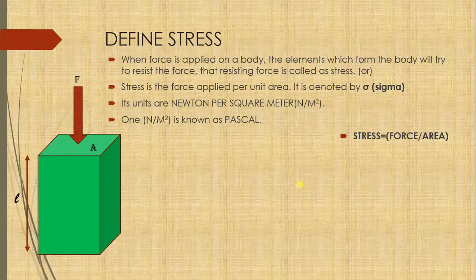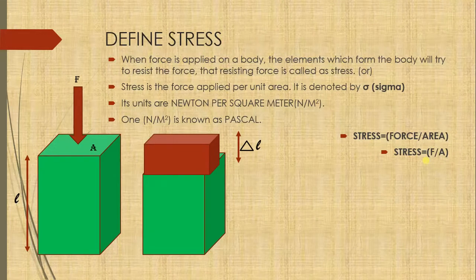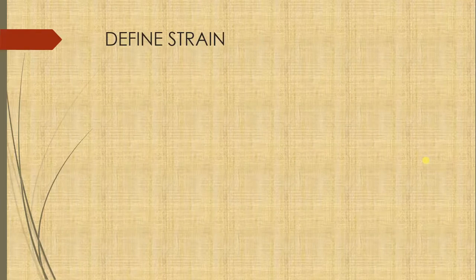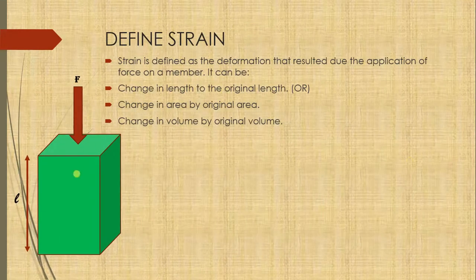In summary: stress is force per unit area, the symbol is sigma (σ), and the units are newton per meter squared or pascal. According to the definition, whenever you apply force F on a member, the elements of the member exert a resisting/reaction force — that is called stress. Simply: σ = F/A. Next, let's discuss strain.